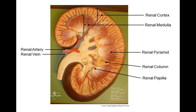This model lets us look at the internal anatomy of the kidney. The region along the outer rim of the kidney is termed the renal cortex. The middle region of the kidney is the renal medulla. The triangular shaped structures are the renal pyramids. The tips of the pyramids are known as the papillae. The areas between the pyramids are the renal columns.